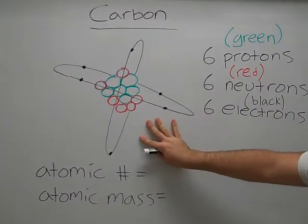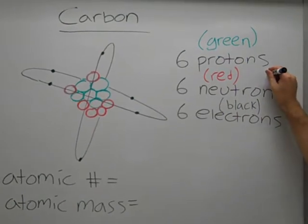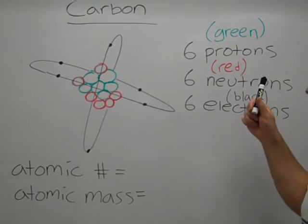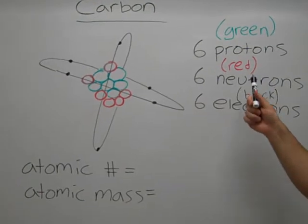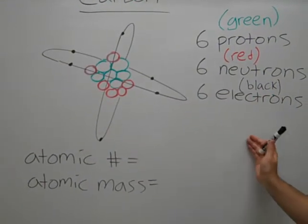This is our old friend the carbon atom, and it's color coded for you again. Six protons in the nucleus represented by green, six neutrons also in the nucleus represented by red, and six electrons in black orbiting the atom.